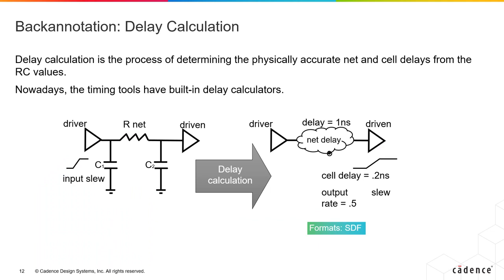One of the steps of back annotation is delay calculation. If we are feeding the tools the delays of the nets, then we need a delay calculator that converts your RC network into a delay network. Statistical analysis requires that net delays be provided either through an SDF or the SPEF, then converted internally through their delay calculators and used to plug in the net delays during optimization. Delay calculation plays an important piece of your whole back annotation process. The accuracy of your net delays depends on both the extraction tools as well as the delay calculation mechanism being used.